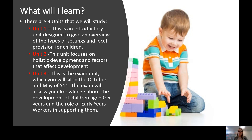Unit 3 is the exam unit, and this is where you will be assessed through an exam paper. Slightly different to GCSEs is that you get two chances to do this exam — the first one will be in October of Year 11, and then again in the summer. In this exam, you will be assessed on your knowledge about the development of young people aged 0 to 5.